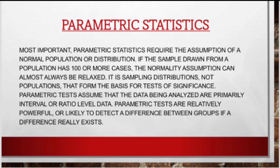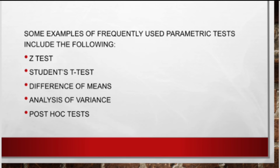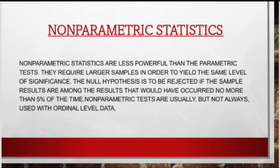Parametric statistics: Most important parametric statistics require the assumption of a normal population or distribution. If the sample drawn from a population has 100 or more cases, the normality assumption can almost always be relaxed. It is sampling distributions, not populations, that form the basis for tests of significance. Parametric tests assume that the data being analyzed are primarily interval or ratio-level data, and they are relatively powerful — likely to detect a difference between groups if a difference really exists. Some examples of frequently used parametric tests include the Z-test, Student's T-test, Difference of Means, Analysis of Variance, and Post-hoc tests.